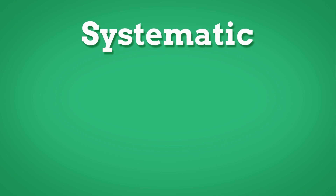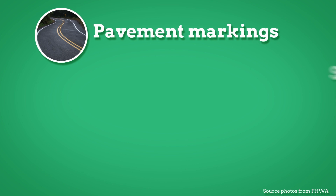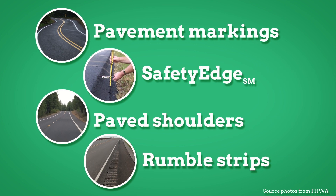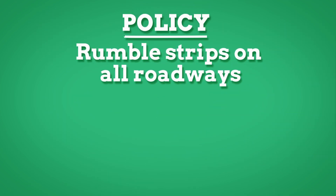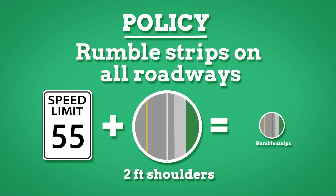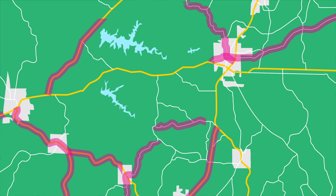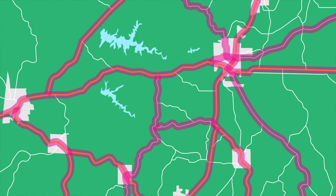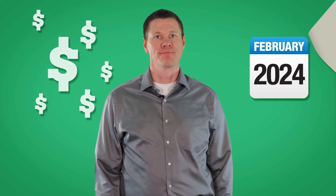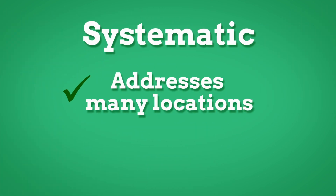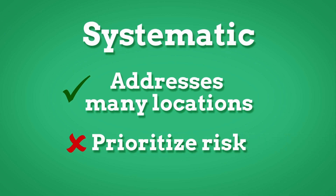What about the systematic approach? When you hear systematic, think system-wide. Countermeasures like pavement markings, safety edge, paved shoulders, or rumble strips are proven to reduce severe crashes, and some agencies require them to be installed on all roads meeting certain criteria. For instance, your agency may adopt a policy to install rumble strips on all roadways with a posted speed of 55 miles an hour and two-foot paved shoulders. The systematic approach provides more widespread deployment of safety improvements than the hotspot approach and can address roadways that have had few or no crashes to date. While a systematic deployment requires no further analysis to prioritize locations, it requires more funding since all locations are improved over time. The systematic approach addresses many locations regardless of crash history, but it is not prioritized based on the risk of crashes.